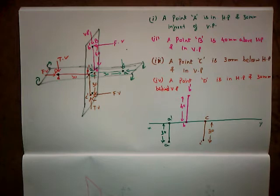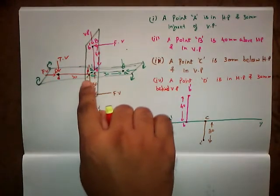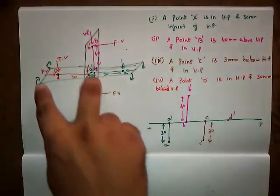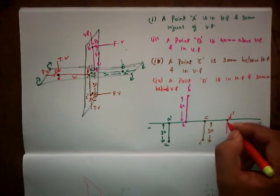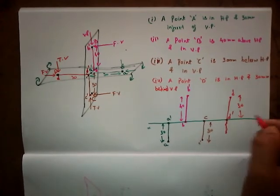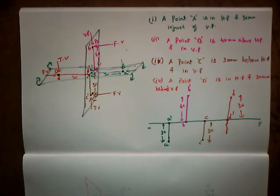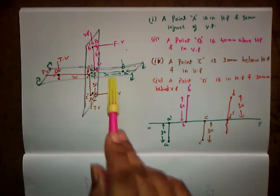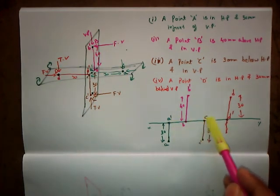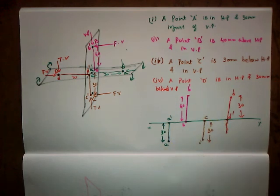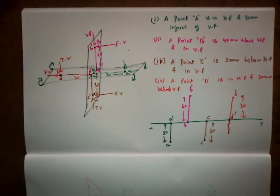So when we see the projections — on the vertical plane we have D dash, that is on the XY reference line. When I rotate this part, it is going to move upwards. This is point D at a distance of 30 mm. Clearly observe: one of the projections of the points are going to be on the XY reference line. So whenever the point is said to be in the plane, one of the projections are going to be on the XY reference line, and the point belongs to two quadrants. We shall learn all the questions and practice in the next class. Thank you.